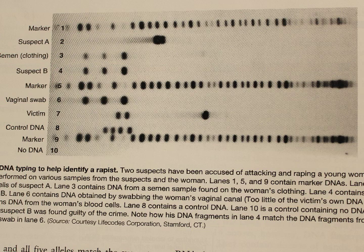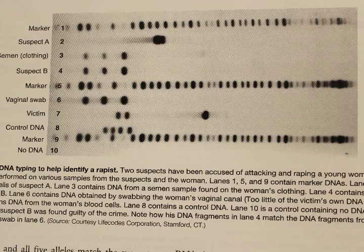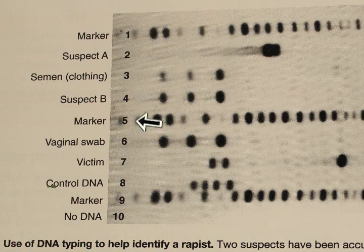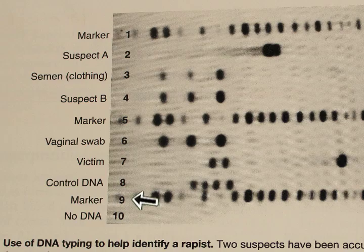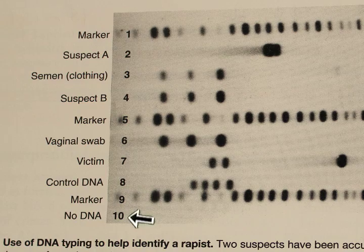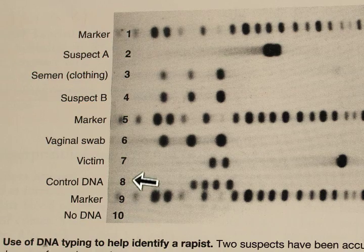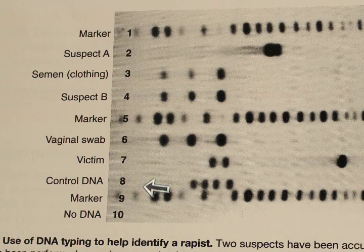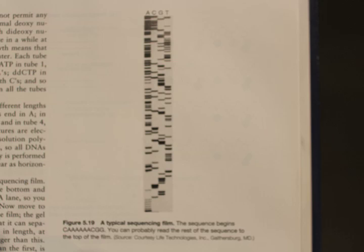Notice the standard quality control type stuff. You have the calibrators labeled as markers in these three columns. The zero blank is here and the control DNA is here. This is DNA fingerprint which is used for forensic studies.